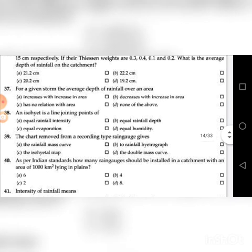Thirty-seventh question: For a given storm, the average depth of rainfall over an area — go through the four choices. The answer is B: decreases with increase in area.